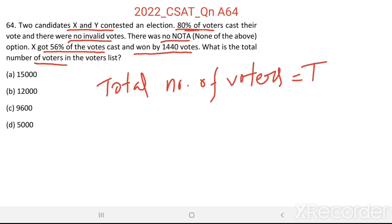Then, 80% of the total number of voters cast their vote. So, total polled votes equal to 80% of T. This is equal to 0.80T.